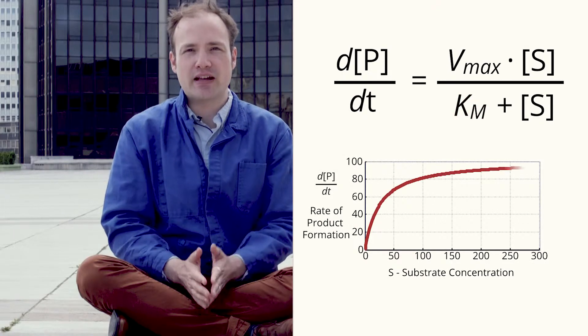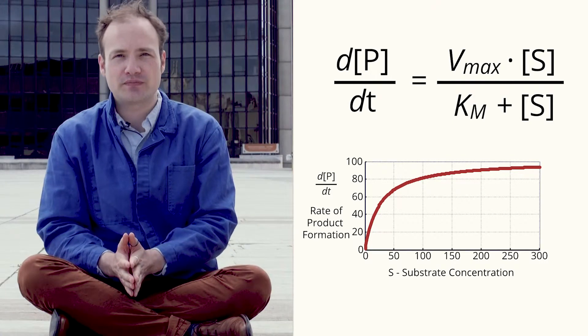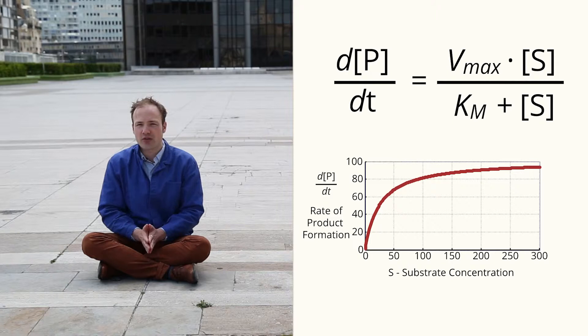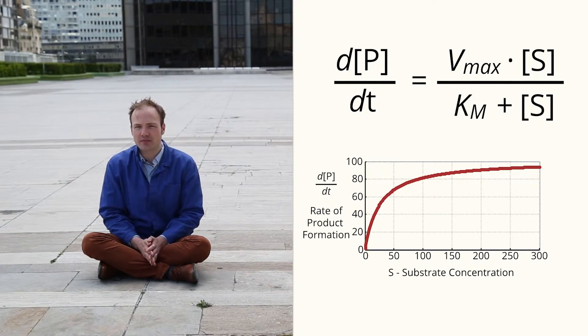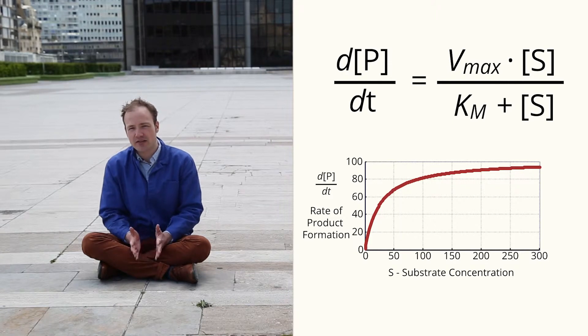Let's take a look at a graph and get some intuition for how these parameters relate to the shape of the curve. The plot is showing us the rate of product formation as a function of substrate concentration. Let's walk through it and see if it makes sense.